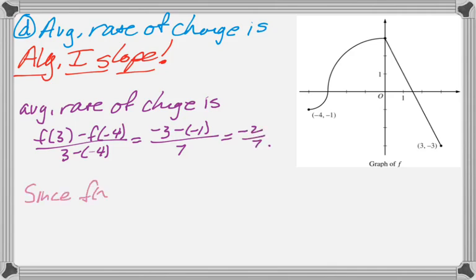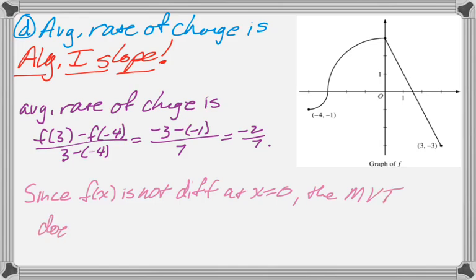And then we're asked about the mean value theorem not being contradicted. Well, it's not contradicted because we know that the mean value theorem says a function must be continuous on the closed, differentiable on the open. And this is not differentiable at x equals 0. So the mean value theorem does not apply. And that's the little question.